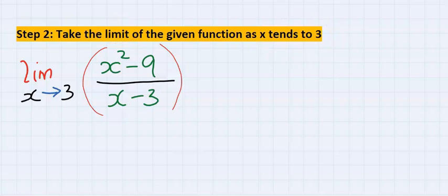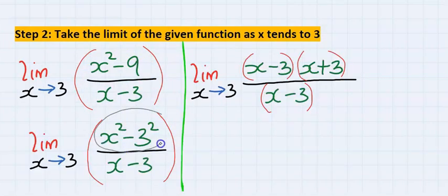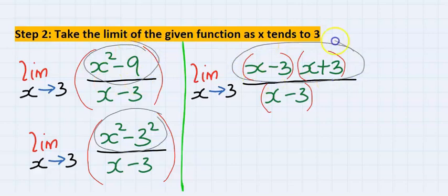To achieve this, express the numerator in difference of two squares. In this expression, the numerator is the same as this, expressed in difference of two squares.